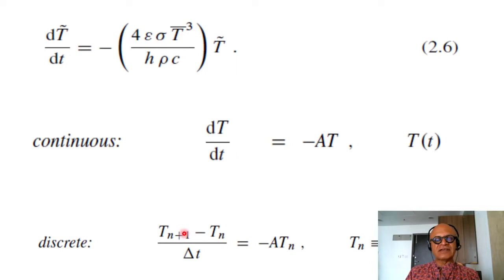And we discretize it again as T_n+1 minus T_n divided by delta T. This is another general notation where N is used very traditionally for time steps and I, J and K are used for spatial discretization in X, Y and Z directions. So we are writing this as T_n+1 minus T_n divided by delta T equals minus A times T_n.